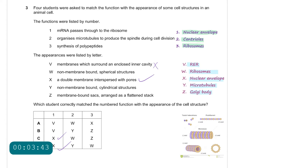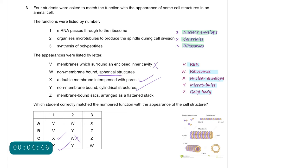Point 2: organizes microtubules to produce the spindle during cell division. This is the centrioles, which are made of microtubules. The suggestions are W or Y. W — non-membrane bound spherical structures — is incorrect because microtubules are not spherical; spherical describes ribosomes. For Y — non-membrane bound cylindrical structures — this is correct because you can see the cylindrical structure of a microtubule. So Y is correct.